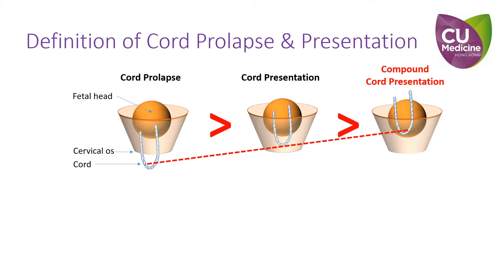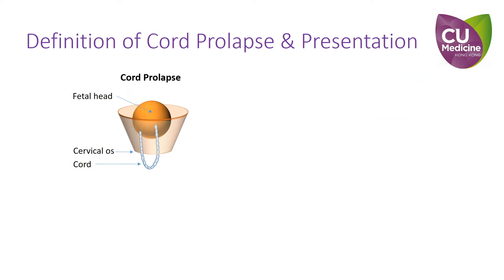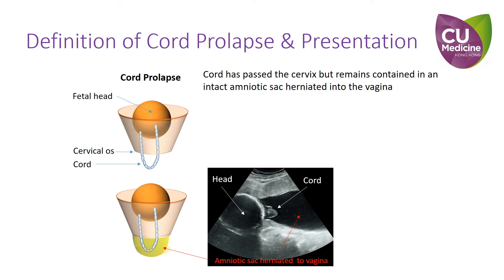Furthermore, the use of the term overt is rather unnecessary and we abandon it. Another point is that cord prolapse is usually defined with the presence of rupture of membranes, while in cord presentation the membranes can be ruptured or intact. Although cord prolapse with ruptured membranes highlights a dangerous condition requiring immediate intervention, it does not cover cases where the cord has passed through the cervix but remains contained in an intact amniotic sac herniated into the vagina.